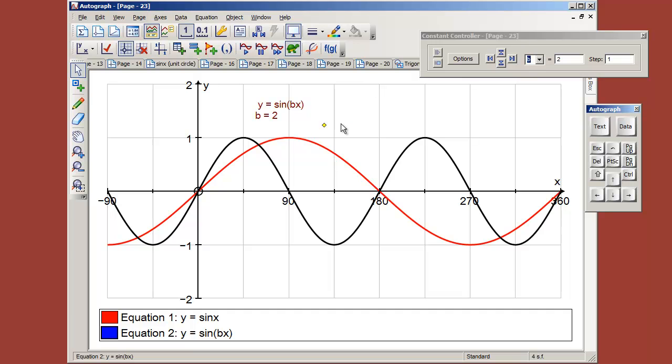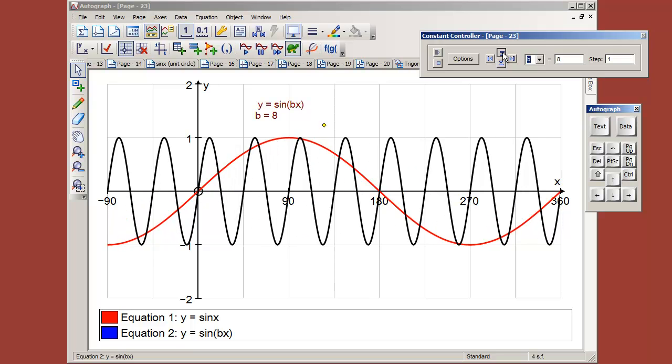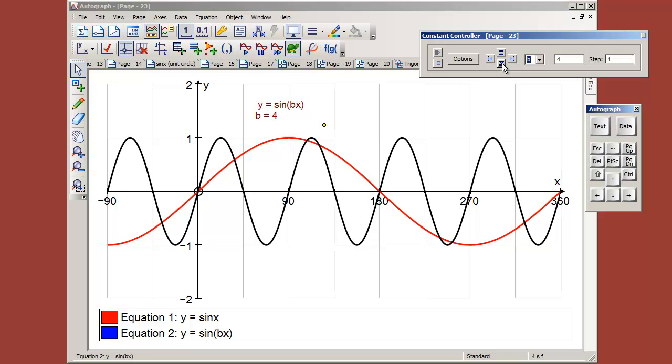So what's going to happen when b is 3? Well, it's going to do 3 half cycles in 180 instead of 2. So off we go. And there's 3, 4, 5, 6 and so on. So that clearly—later on when they've studied this in more detail—it's called frequency.